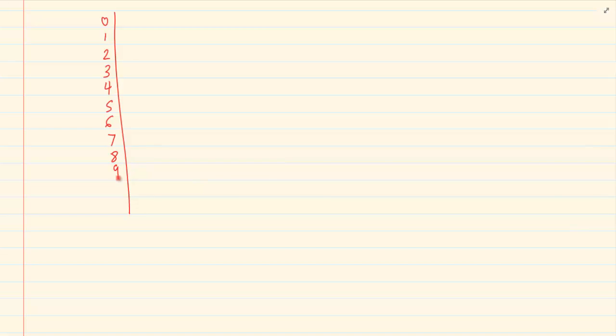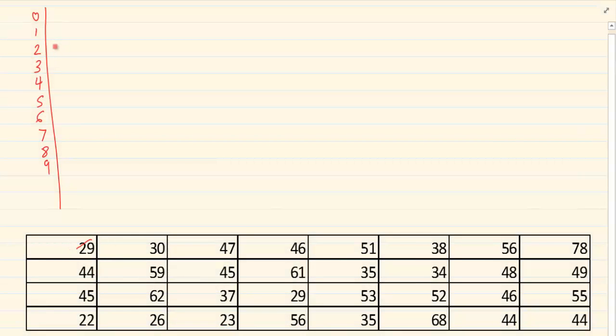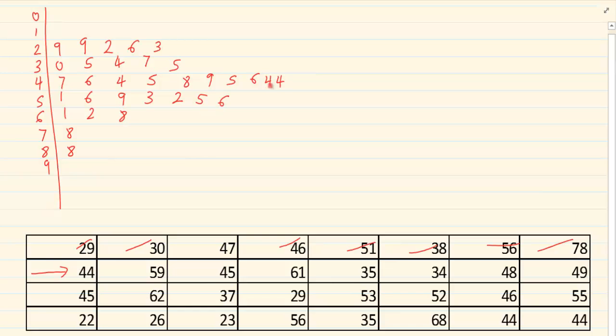Then we are going to put in our information. We have got 29, so under 2 I am going to put a 9, and then we have got 30, 47, 46, 51, 38. For grade 8, you need to make sure that you know how to do a tree diagram.